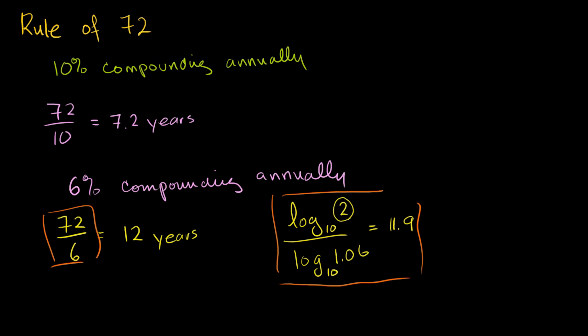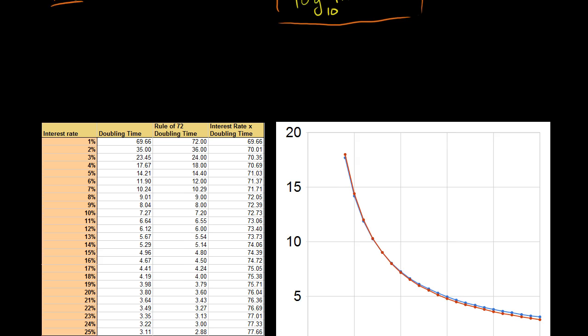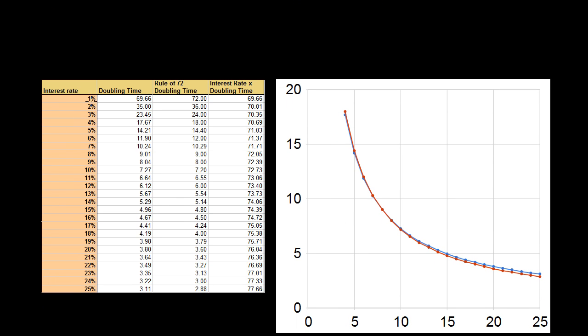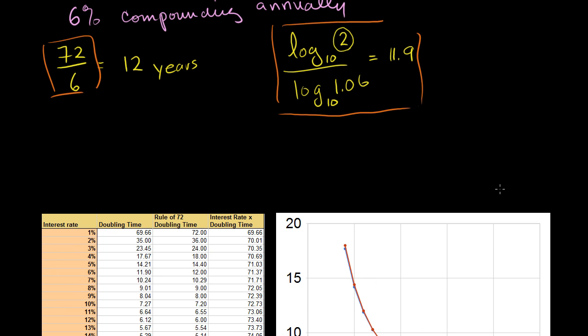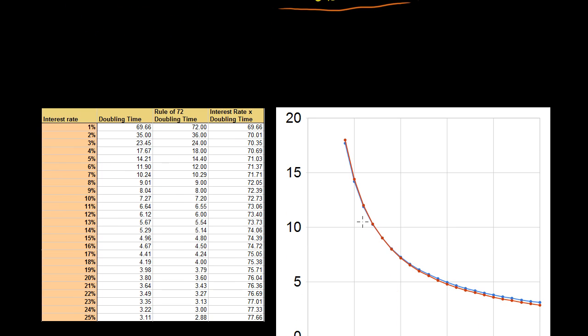And just to get a better sense of how good this number 72 is, what I did is I plotted on a spreadsheet. I said, OK, here's the different interest rates. This is the actual time it would take to double. So I'm actually using this formula right here to figure out the actual, the precise amount of time it'll take to double. Let's say this is in years, if we're compounding annually. So if you're at 1%, it'll take you 70 years to double your money. At 25%, it'll only take you a little over three years to double your money.